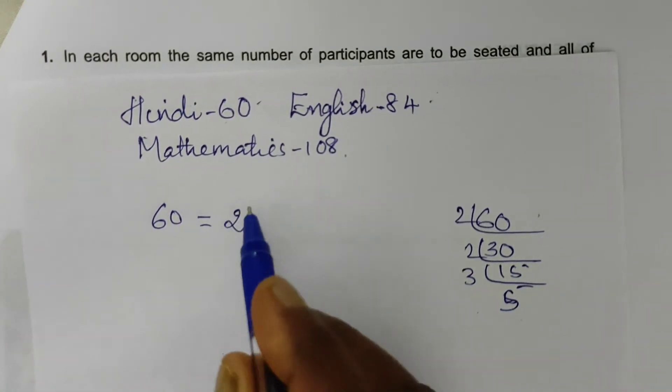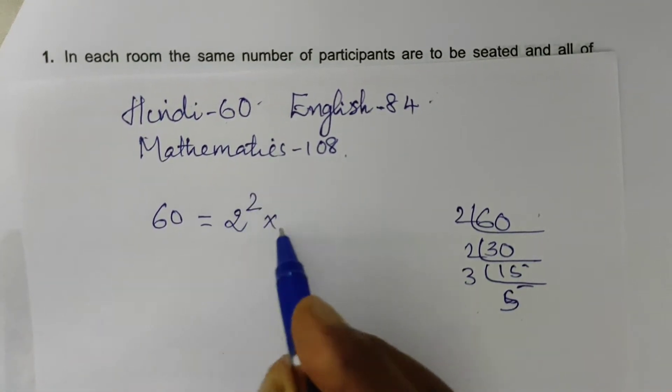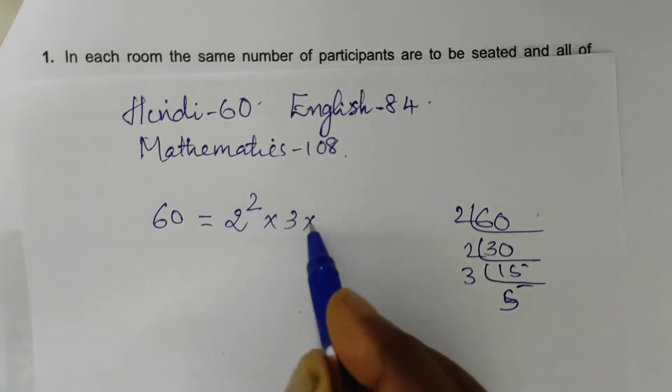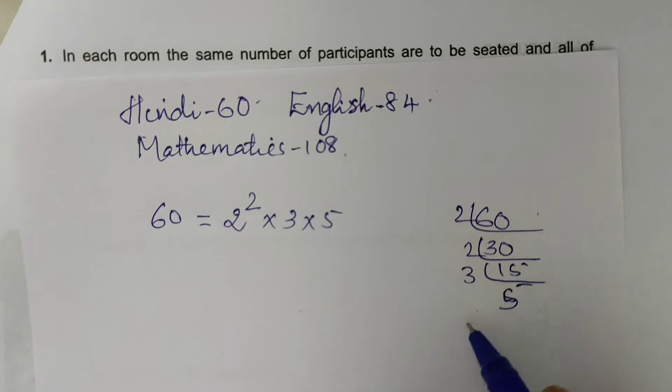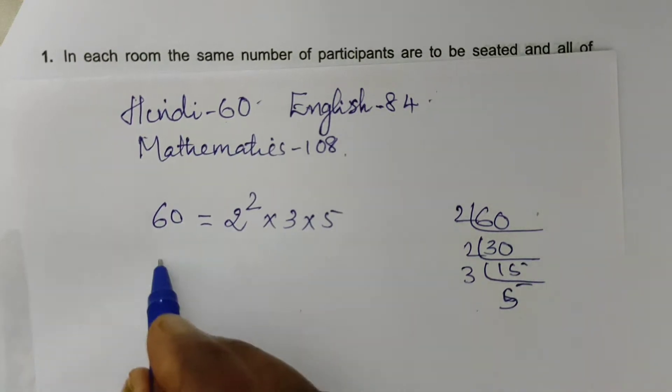60 is equal to 2 squared into 3 into 5. The next number is 84.